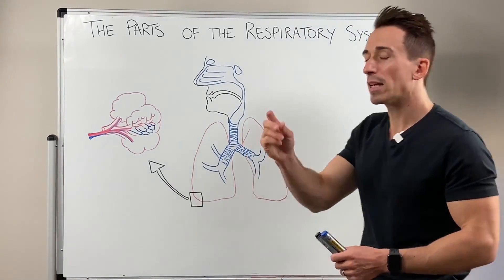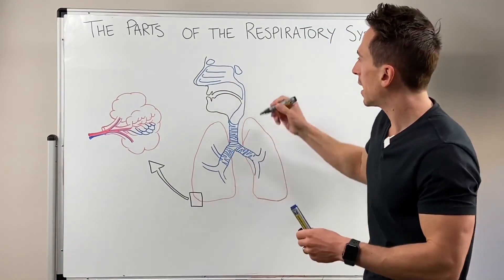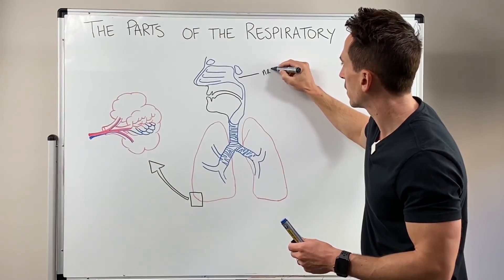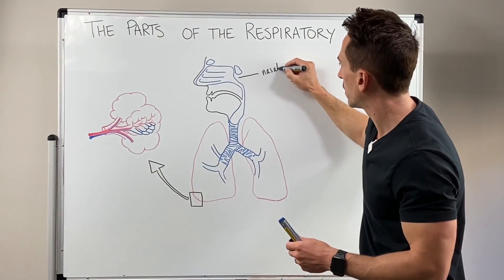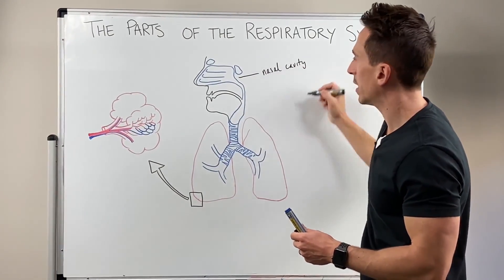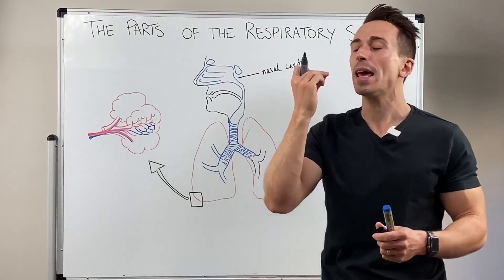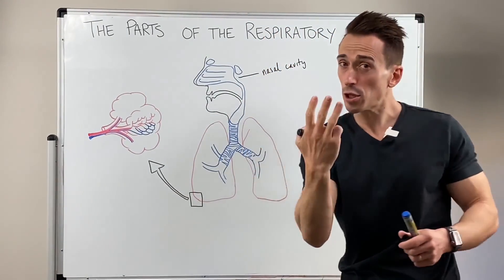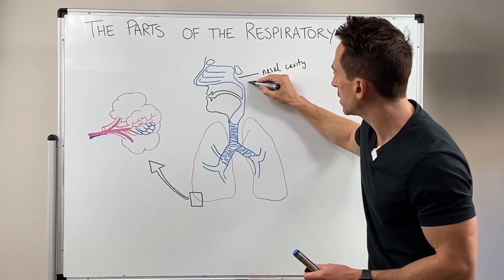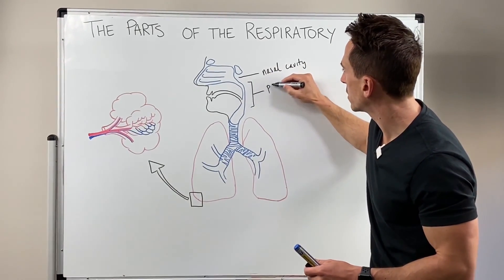First of all, when air is first inspired, it enters something called the nasal cavity. Once it enters the nasal cavity, it moves to the back of the throat, and that area we call the pharynx. There are actually three parts to the pharynx, so I'm going to highlight this entire area here as the pharynx.